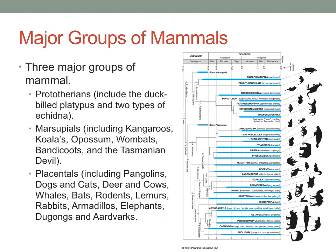Let's talk briefly about the major mammalian groups. You can break them down into three categories. There are the prototherians, which include basically all the monotremes — the duck-billed platypus and two types of echidna. Then there are the marsupials — things like the kangaroo, koala, possum, wombat, bandicoot, and Tasmanian devil. And then the last group are the placentals — everything from pangolins, dogs and cats, deer and cows, whales, bats, rodents, lemurs, rabbits, armadillos, elephants, dugongs, and even the aardvark. In the next couple of slides we'll get into what distinguishes them from each other.